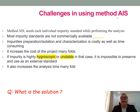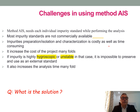Challenges in using the AIS method: the AIS method needs each individual impurity standard while performing the analysis. Most impurity standards are not commercially available, especially during the development stage. Impurity preparation, isolation, and characterization is a costly as well as time-consuming process and increases the cost of a project many folds. If an impurity is highly hygroscopic or unstable, it is impossible to preserve and use it as an external standard. It also increases the analysis time many fold. The question comes: what is the solution?